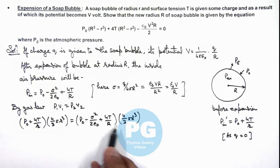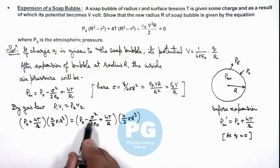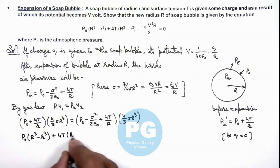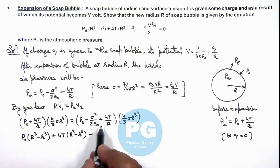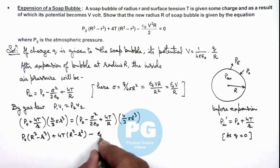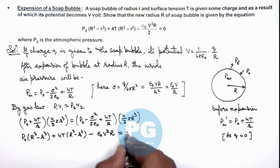If we simplify this relation by substituting the value of sigma, and if we cross multiply and simplify the relation, this will give us P₀(R³ - r³) + 4T(R² - r²) - ε₀V²R = 0. You can rearrange and get this equation.